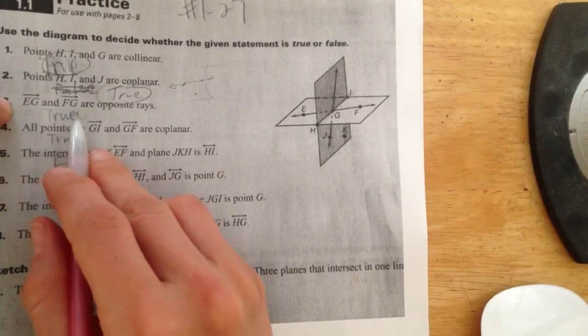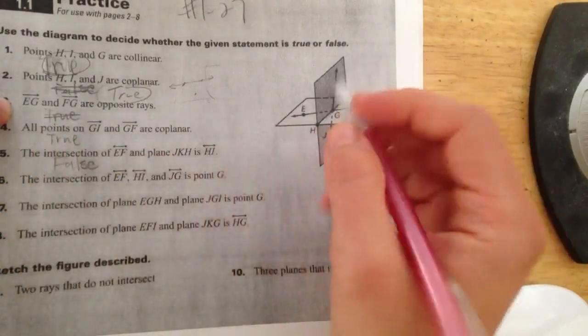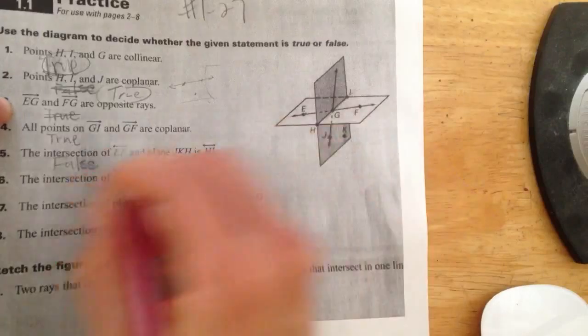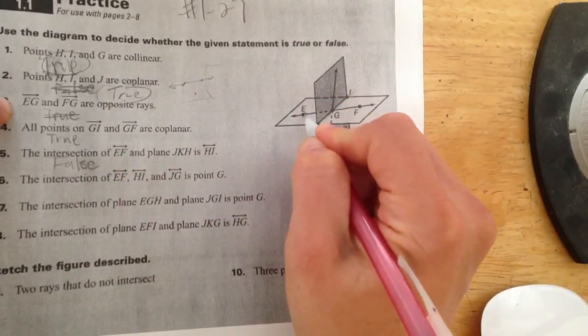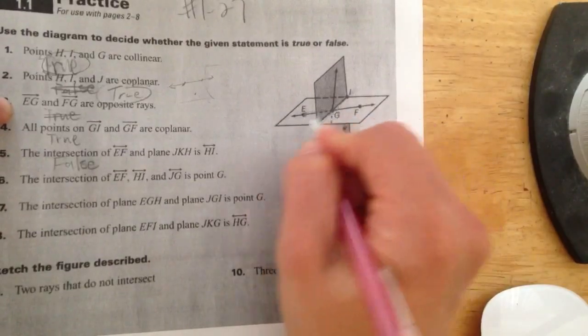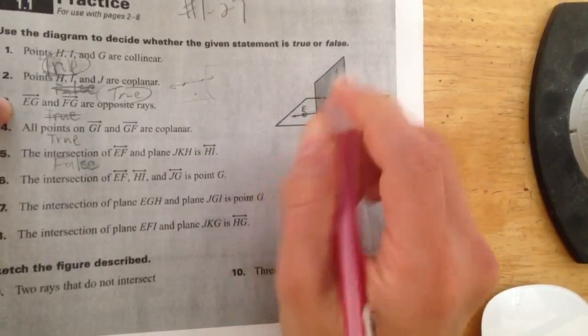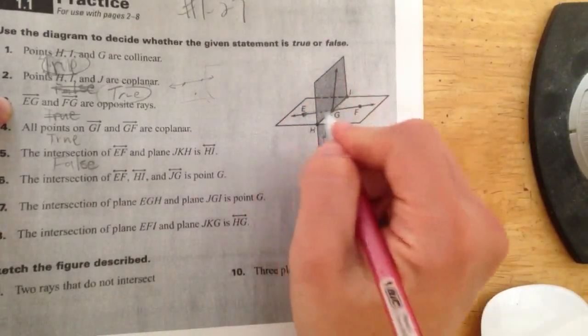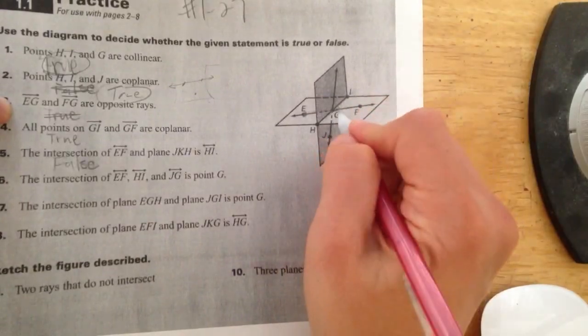E, G, and F, G are opposite rays. E, G, they have to start at the same point to be opposite rays. So E, G, and F, G, even though they go in opposite directions, they're not opposite rays because they don't start at the same point. So if you wanted an example of opposite rays...